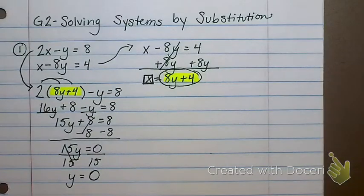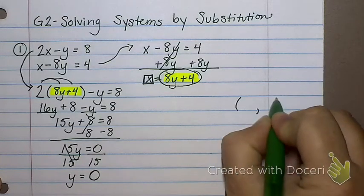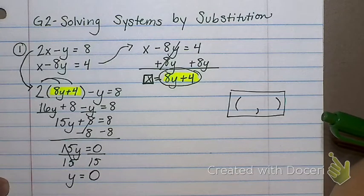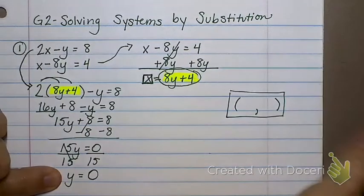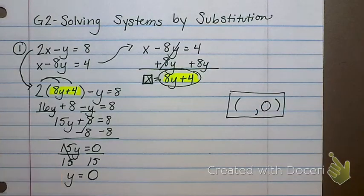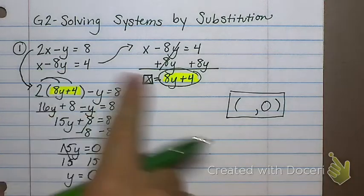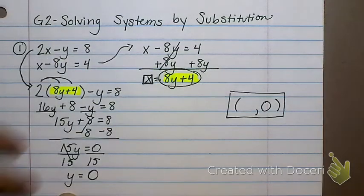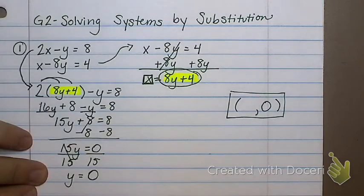Now do you remember what my answer is supposed to look like from the homework last night? My answer is an ordered pair. Remember, it's the point where they cross. If I were to graph them, that would be the point where they would cross. What did I just find? I found the y value of where they cross. So I picked one equation, got a letter by itself, and then substituted into the other equation and I got one answer. How do I find the last answer?